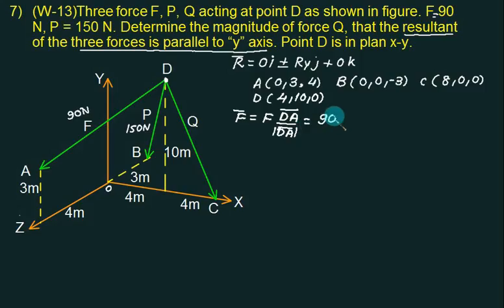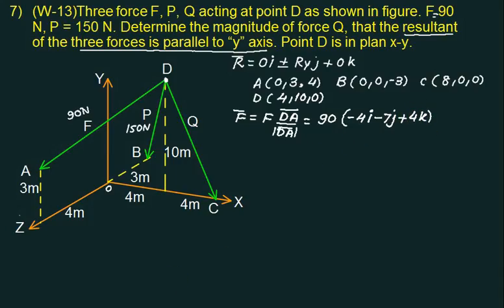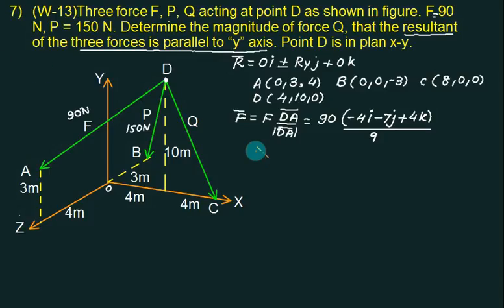F is 90. What is DA? DA is A minus D: 0 minus 4 gives minus 4 I; 3 minus 10 gives minus 7 J; 4 minus 0 gives plus 4 K. The magnitude is the square root of 4² plus 7² plus 4², which equals 9. So F̄ = (90/9)(−4I − 7J + 4K) = −40I − 70J + 40K.